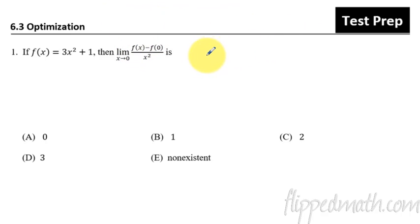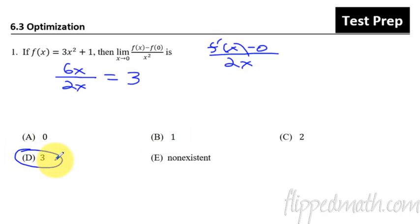L'Hopital's rule is really nice because then we just take the derivative of the top and the derivative of the bottom. On top we get f prime of x minus zero, and on bottom we get 2x. The derivative of f(x) is 6x, and on the bottom we have 2x. Simplify that and we get 3. Pretty quick and easy problem if you recognize L'Hopital's is possible.